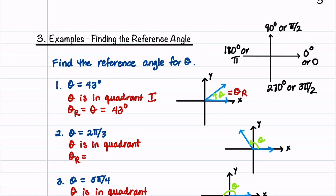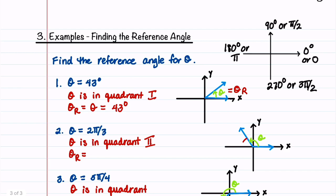In our second example, theta is 2 pi over 3. We notice that 2 pi over 3 places theta in quadrant 2, and our reference angle looks like this. That gives us theta sub r equal to pi minus theta, which is pi minus 2 pi over 3, so our reference angle is pi over 3.